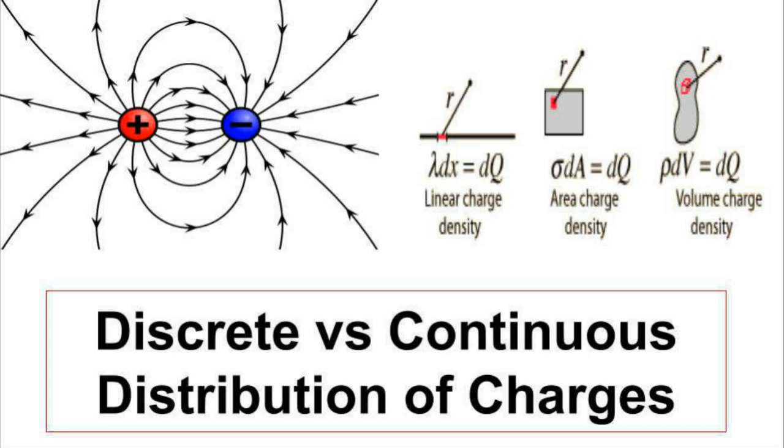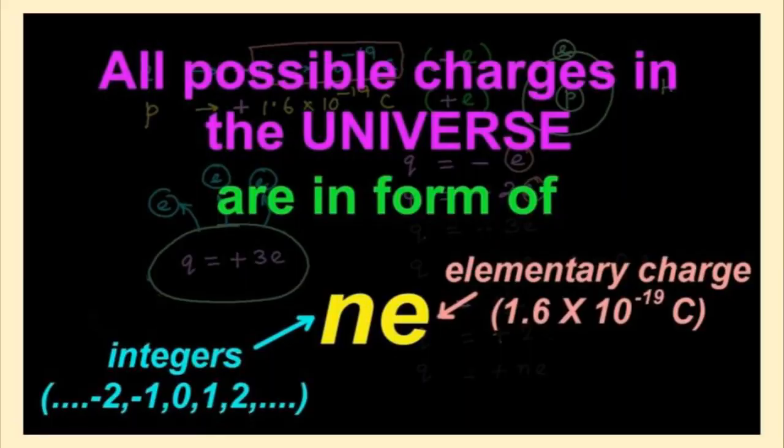All the possible charges in the universe are in the form of N into E, where N is an integer. It may be minus 2, minus 1, 0, 1, 2, 3, etc. And E is the elementary charge whose value is 1.6 into 10 to the power of minus 19 coulomb.